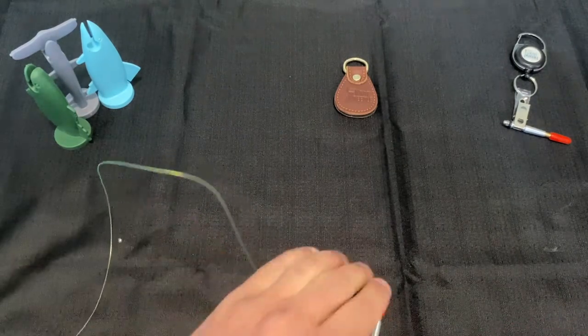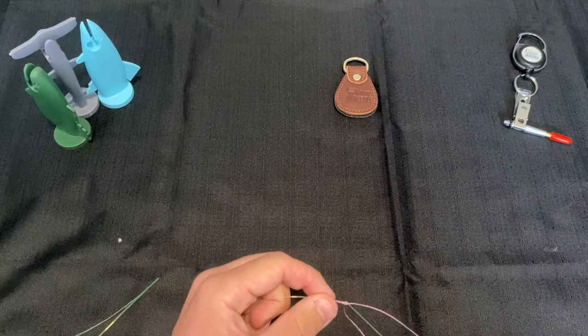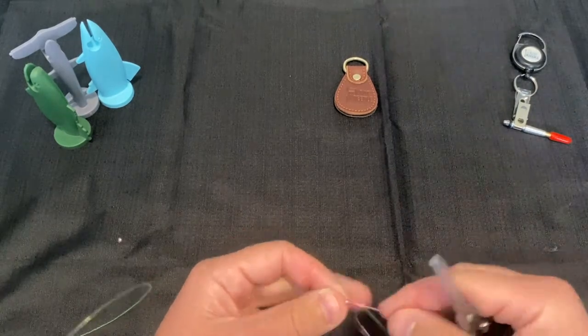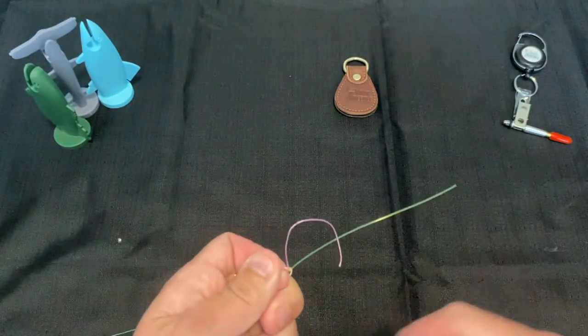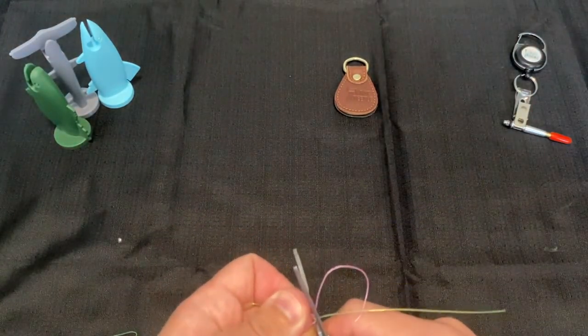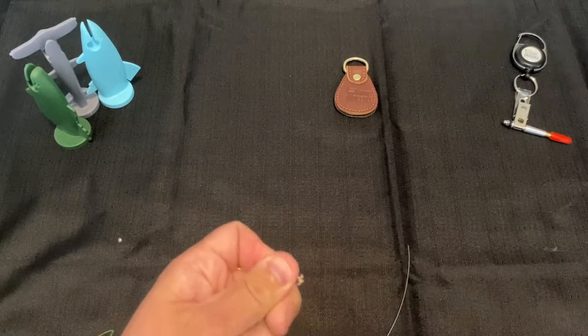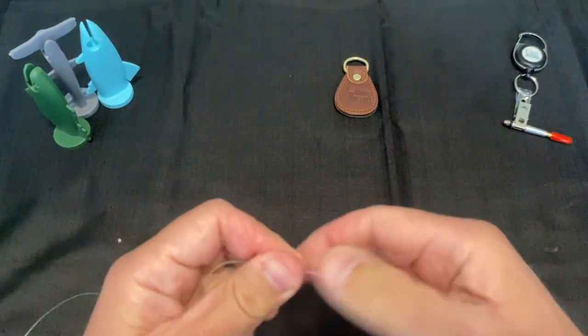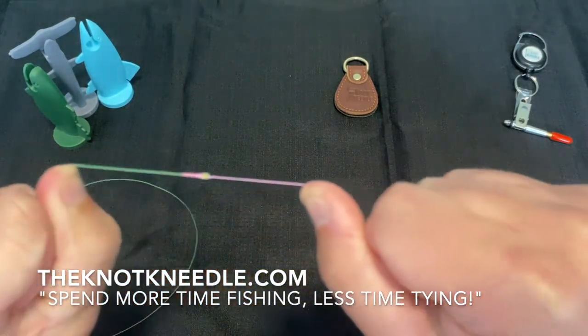That smooth knot allows the connection to move through the guides of your rod very easily. That's your Bob Sands knot using the knot needle.